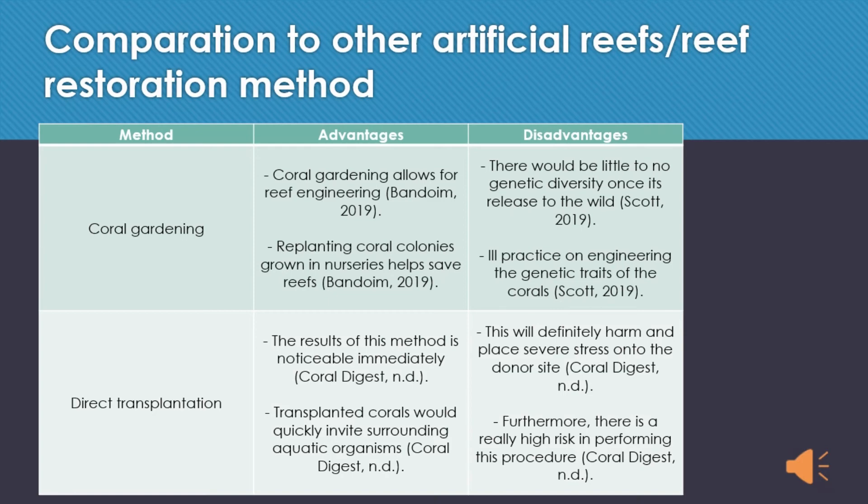The last method up for comparison is direct transplantation. Its advantages are that the results of this method are noticeable immediately once the procedure takes place, and the transplanted corals will also quickly invite surrounding aquatic organisms to thrive. The disadvantages, however, are that this will definitely harm and place severe stress onto the donor coral site, and furthermore, there is a really high risk in performing this procedure.